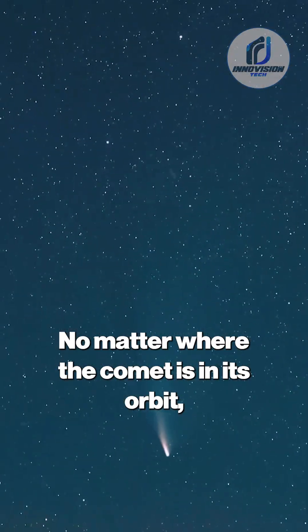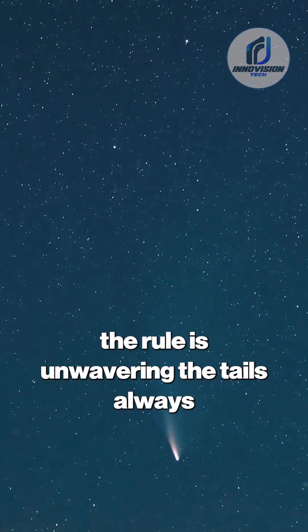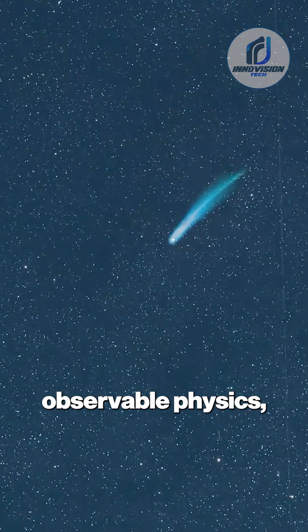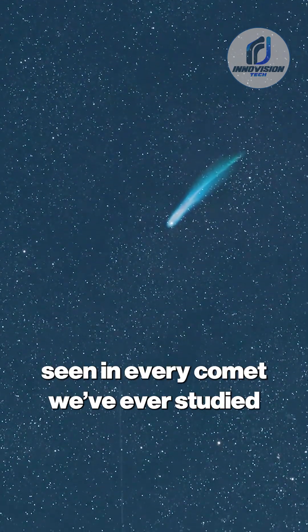No matter where the comet is in its orbit, the rule is unwavering. The tails always point away from the sun. This is fundamental observable physics, seen in every comet we've ever studied.